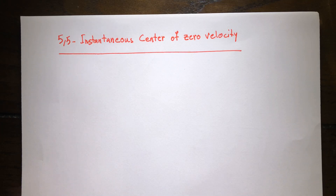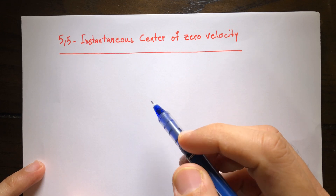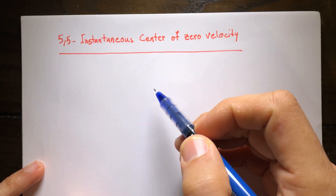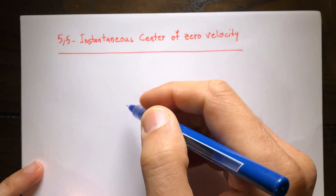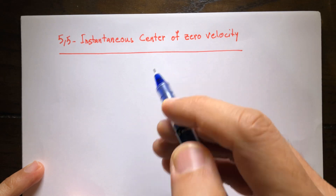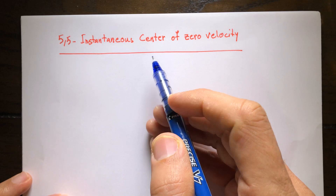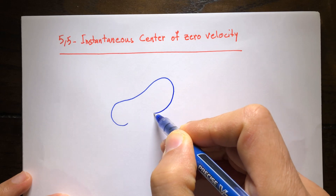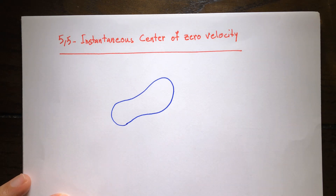So far we talked about relative velocity between two points of a rigid body, and before that we talked about finding velocity and acceleration of different points on the rigid body when it's rotating about a fixed point. In this part, we discuss the instantaneous center of zero velocity — which we'll call just the instantaneous center — a very interesting phenomenon and a useful tool to analyze the kinematics of a rigid body.